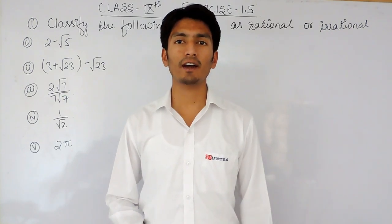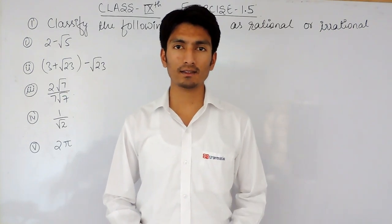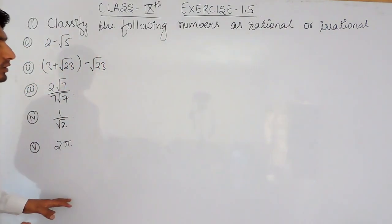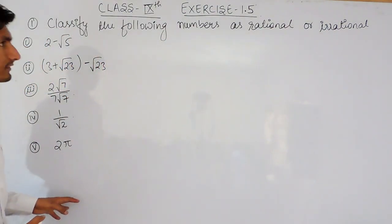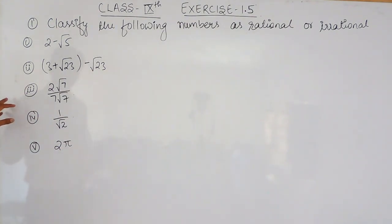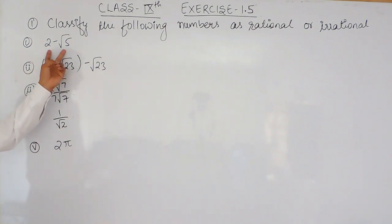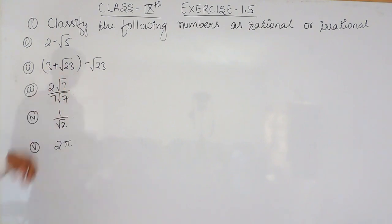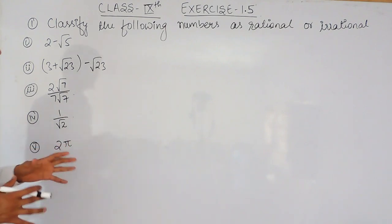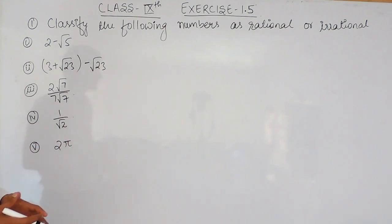Hello everyone, we are from True Maths and in this video we are going to solve the first question of Exercise 1.5, in which you have to classify the following numbers as rational or irrational. You have to find whether each expression is rational or irrational. Before solving this, you need to know certain things about rational and irrational numbers.